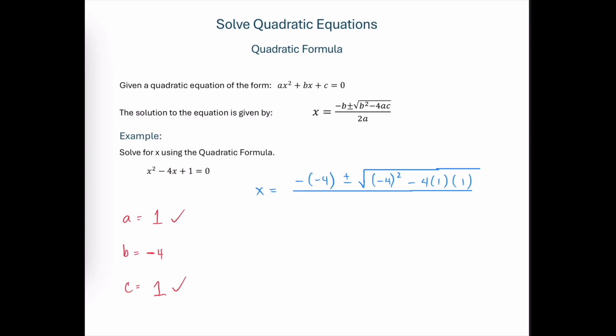Continuing with the quadratic formula, we have 2 times a in the denominator of the fraction. And we'll open up a hole for the quantity that gets plugged in for a. And again, a is positive 1, so we're going to plug positive 1 into here.